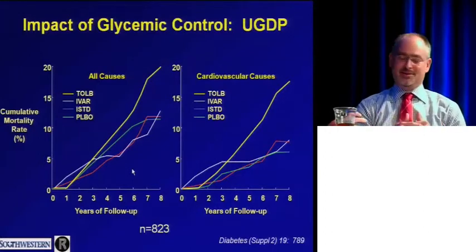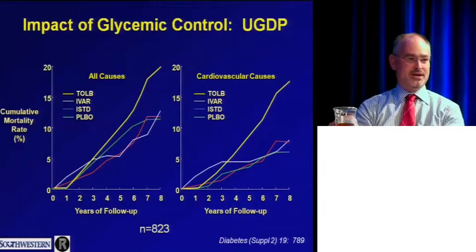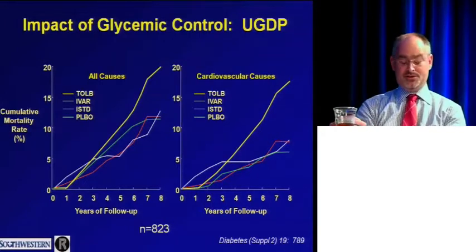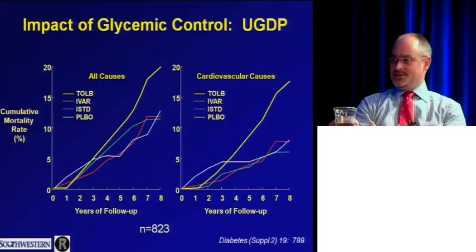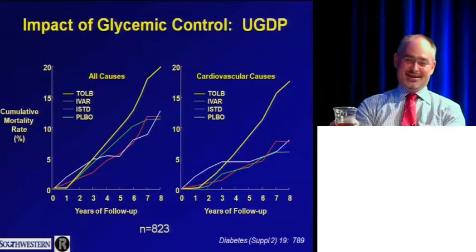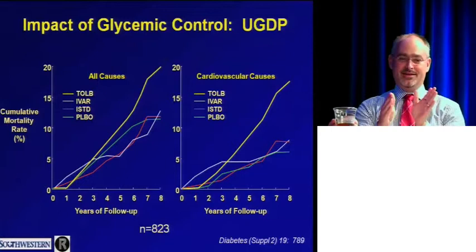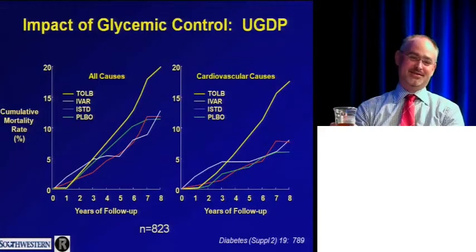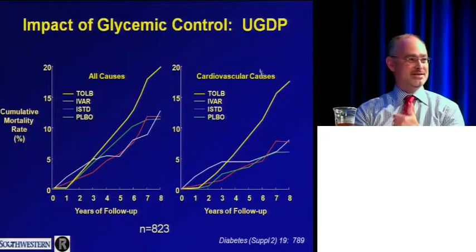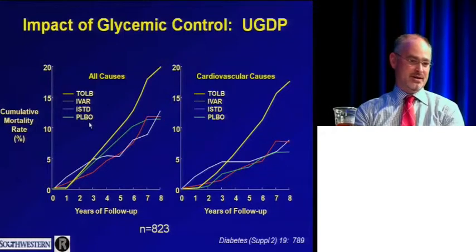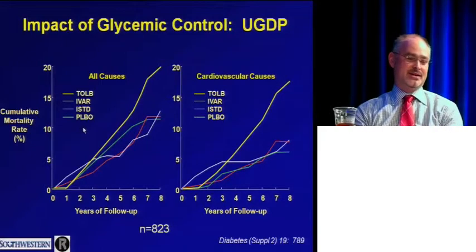Now transitioning to chronic management: there's been a lot of activity looking at cardiovascular risk and outcomes with various glucose control strategies. The endocrinologists were early but got burned by their first trial — the 1970s University Group Diabetes Program — and didn't do another for about 30 years. That was a multicenter randomized trial in type 2 diabetes comparing five therapies, including tolbutamide, insulin variable, insulin standard, and a pill placebo.